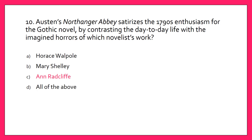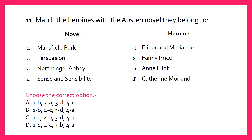Match the heroines with the Austen novel they belong to — one of the most important questions. You have Eleanor and Marianne, Fanny Price, Anne Elliot, and Catherine Morland. The answer is option B: Fanny Price belongs to Mansfield Park, Eleanor and Marianne belong to Sense and Sensibility, Anne Elliot belongs to Persuasion, and Catherine Morland belongs to Northanger Abbey.